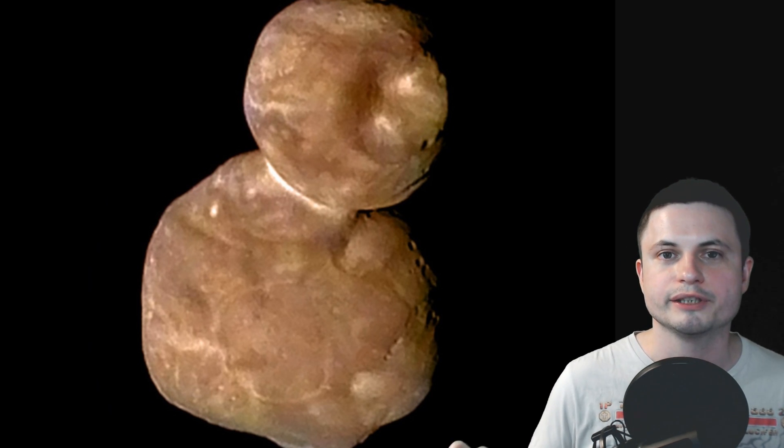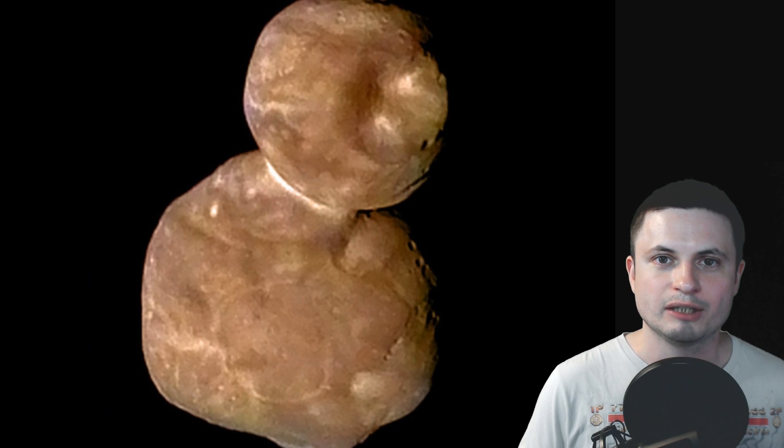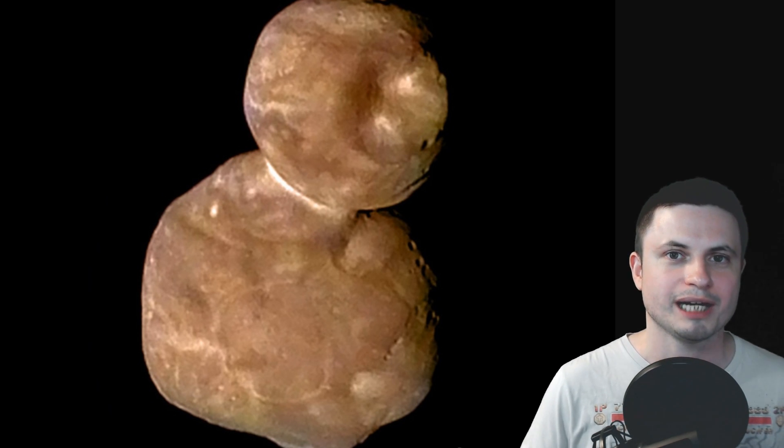But most importantly, with the confirmation that ultimate Thule is also reddish brown and covered in Tholines, all of this kind of suggests to us that, for all we know, life is like everywhere in a solar system. We just haven't really looked hard enough. We do need to land on one of these objects. We need to kind of drill into it and look carefully.